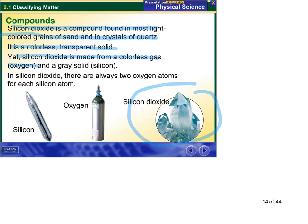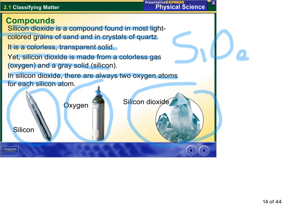And it's made up of colorless gas oxygen and a gray solid silicon. It always contains two oxygen atoms for every one silicon atom. And we have a formula for it, SiO2. Compounds will always have a formula.